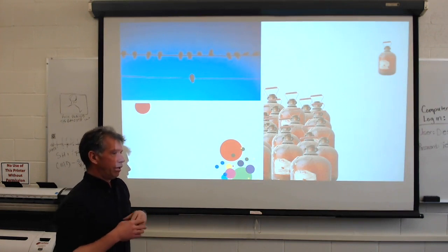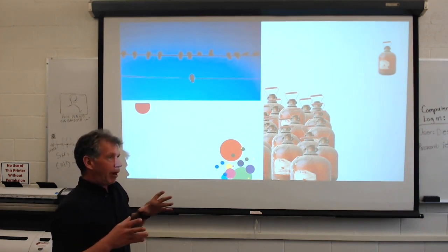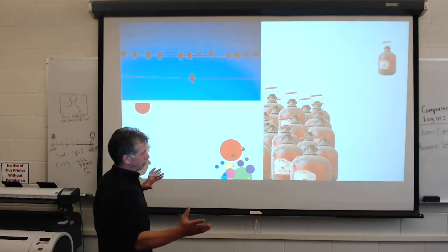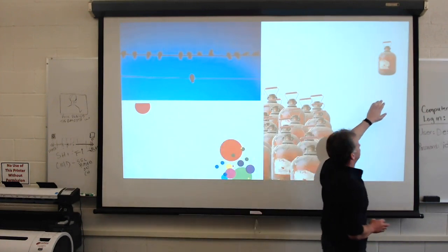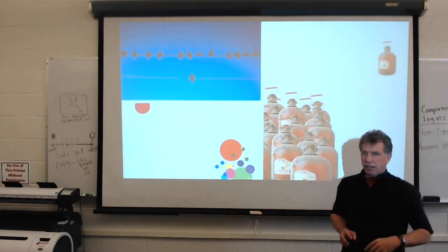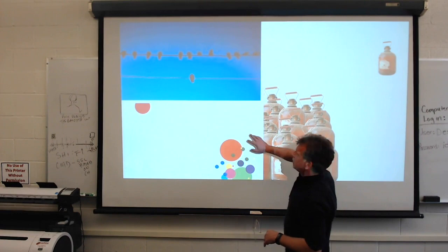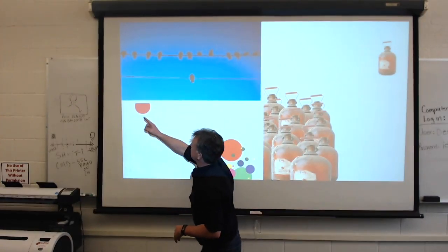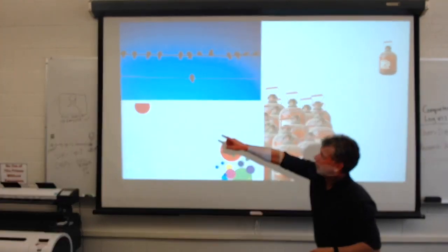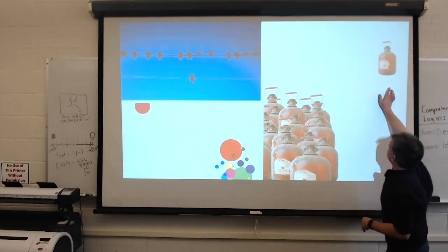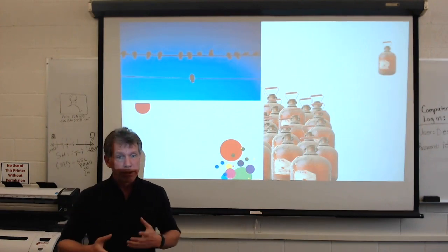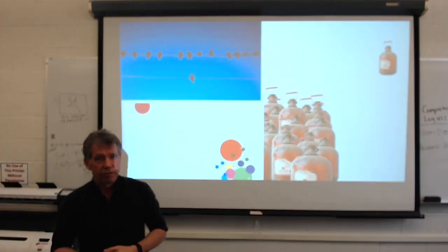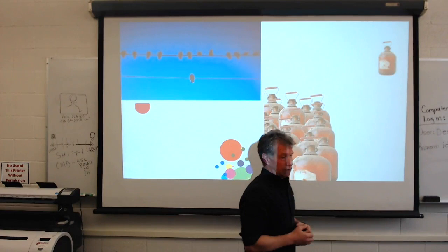And through isolation, through separating one thing from the others, we have made the one item more important. So the dominant item in all three of these images is that individual element. Doesn't matter if it's a bird, if it's a circle, or it's a jug. It doesn't matter. It's by itself, which makes it more important than the rest of the items in the composition.